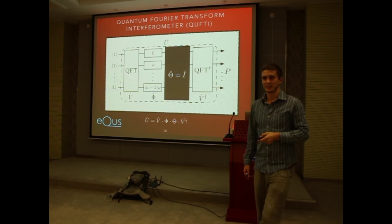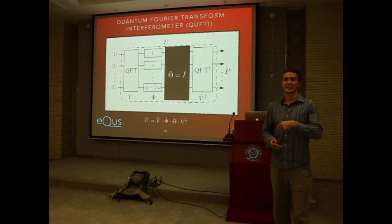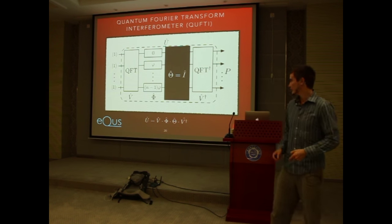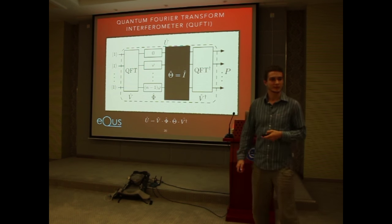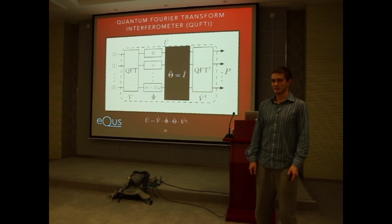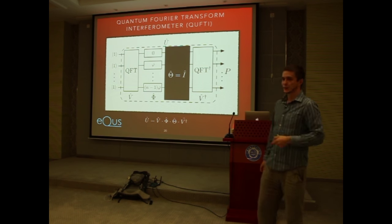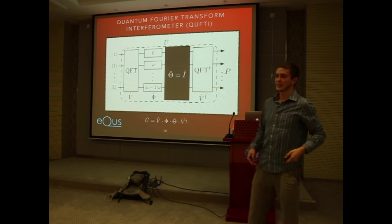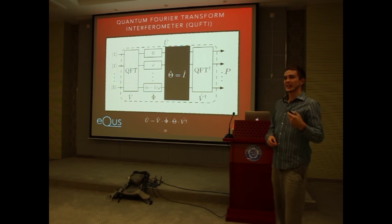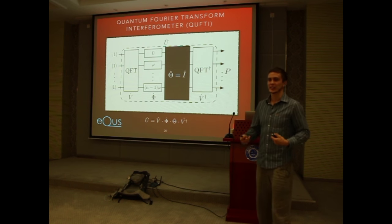Phi is the unknown phase we're trying to estimate, and theta is something we can tune in the lab to put the device in the optimal measurement regime. In most schemes like NOON states there's a sweet phase spot — you have a control phase and a feedback loop and move to the point of optimal sensitivity. If the unknown phase is zero, QFT times QFT-dagger gives identity, so you measure one photon at every output mode. If it's slightly away from zero, most of the time you get all ones, but every now and then you get something else — and this is the signal we use to estimate phi.